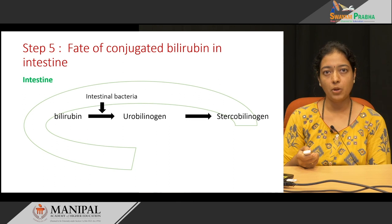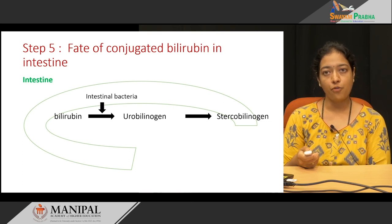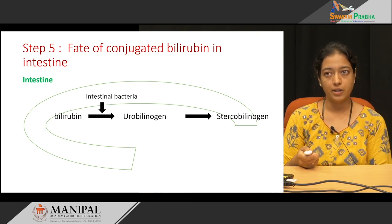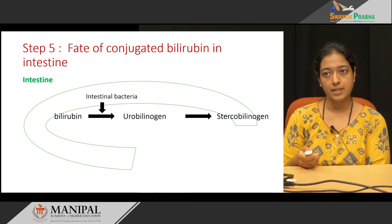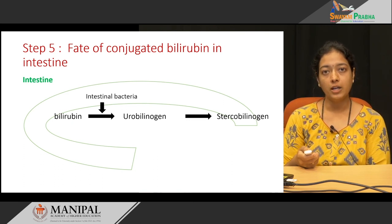Once conjugated bilirubin from the liver enters the bile and then the intestine, it gets deconjugated and free bilirubin is formed. The free bilirubin is acted upon by intestinal bacteria to form urobilinogen, which further forms stercobilinogen. Both urobilinogen and stercobilinogen are colourless compounds.